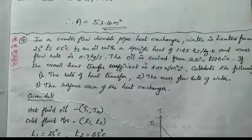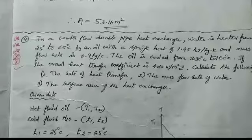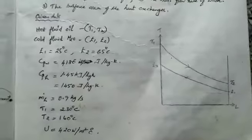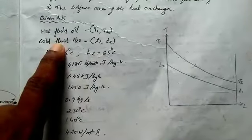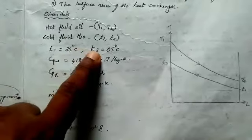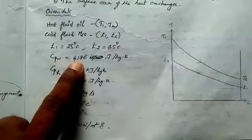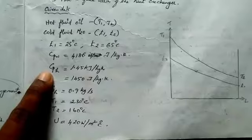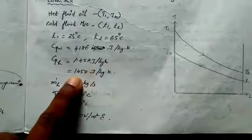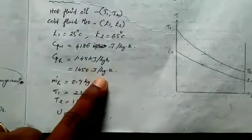The hot fluid oil: T1 = 230 degree Celsius, T2 = 160 degree Celsius. Cold fluid water: t1 = 25 degree Celsius, t2 = 65 degree Celsius. CP of water = 4186 J per kg Kelvin. CP of oil = 1.45 kJ per kg Kelvin = 1450 J per kg Kelvin.